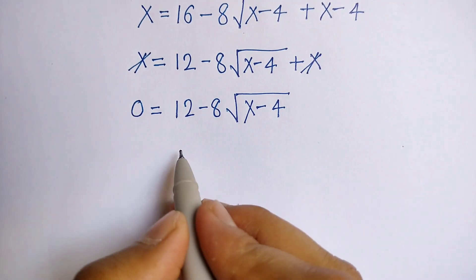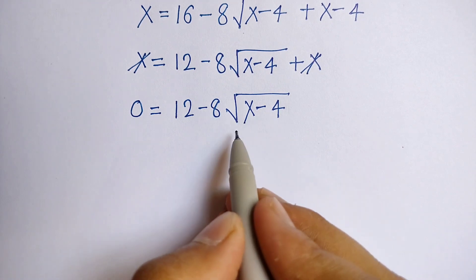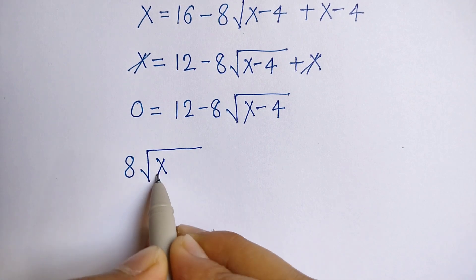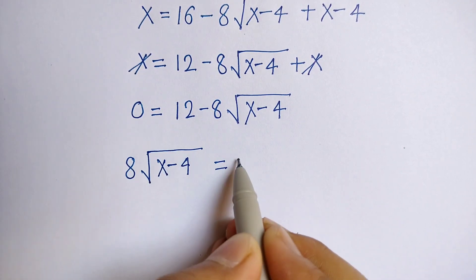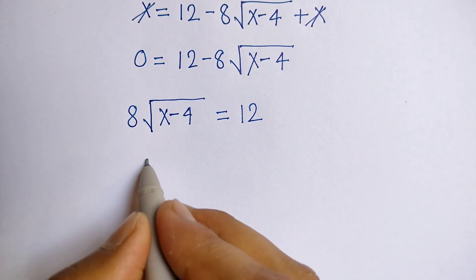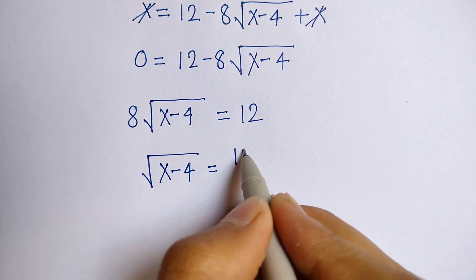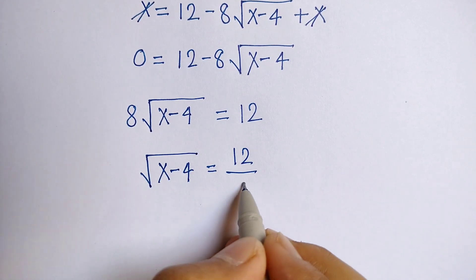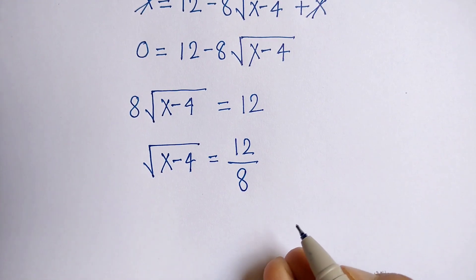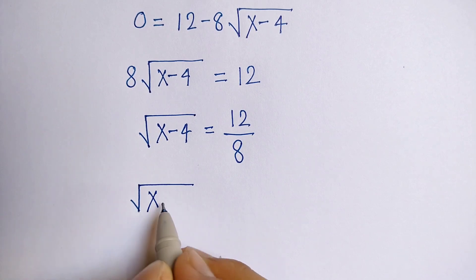Moving 8 root x minus 4 to the left-hand side, we get 8 into root x minus 4 is equal to 12. Therefore root x minus 4 is equal to 12 divided by 8.